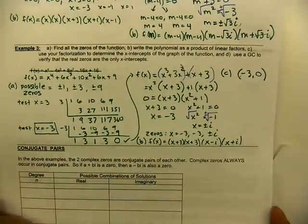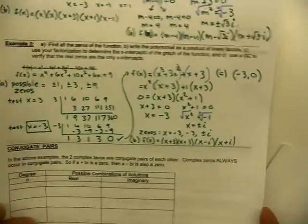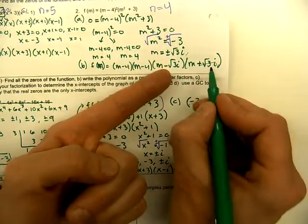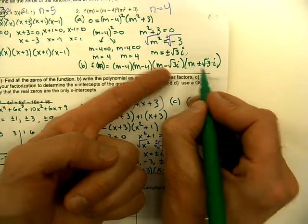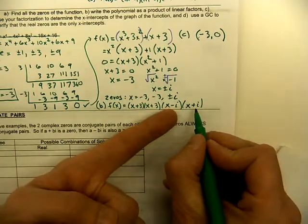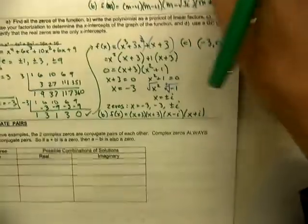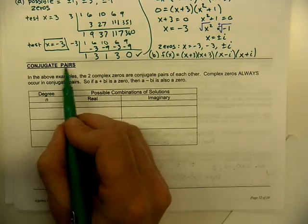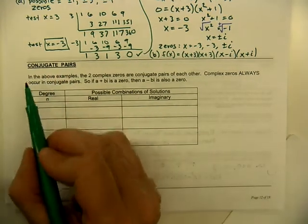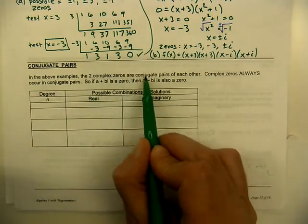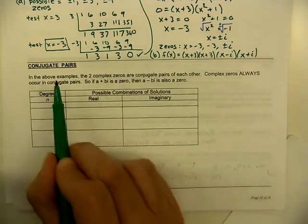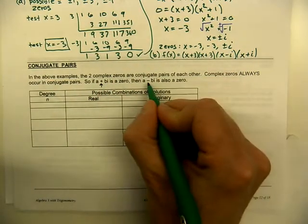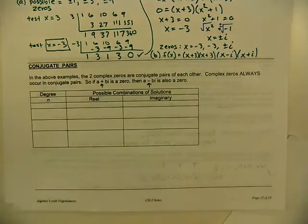Something very interesting is happening here — it's a pattern. In examples two and three, whenever we've had imaginary values, there have always been two of them. That's not a coincidence; it's a true pattern. Imaginary values always come in pairs — not identical pairs, but conjugate pairs, meaning one is positive and one is negative. In the examples, the two complex zeros are conjugate pairs. So if a plus bi is one zero, then a minus bi must be its pair.